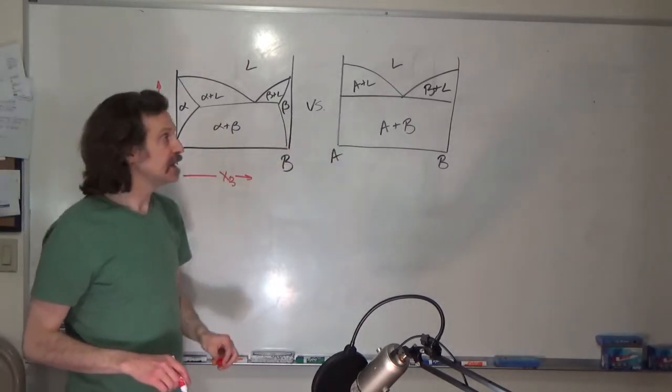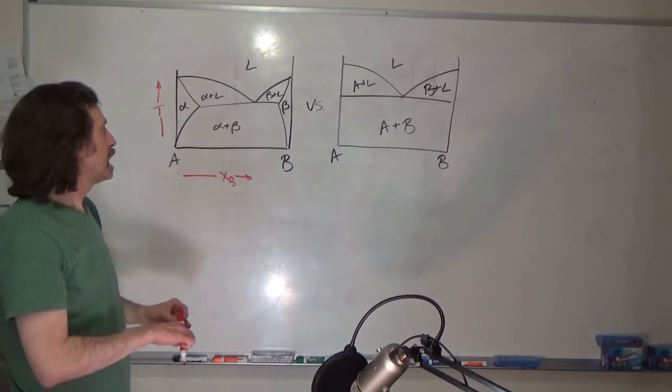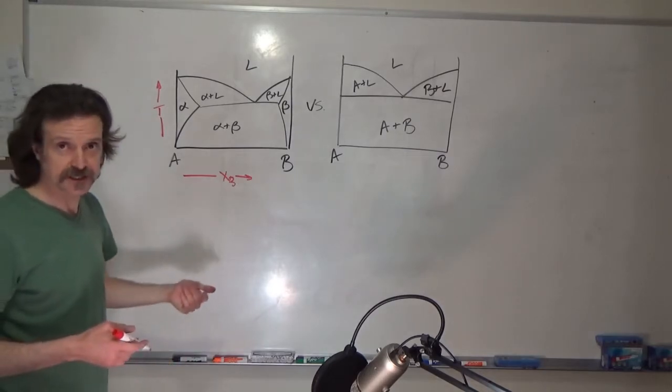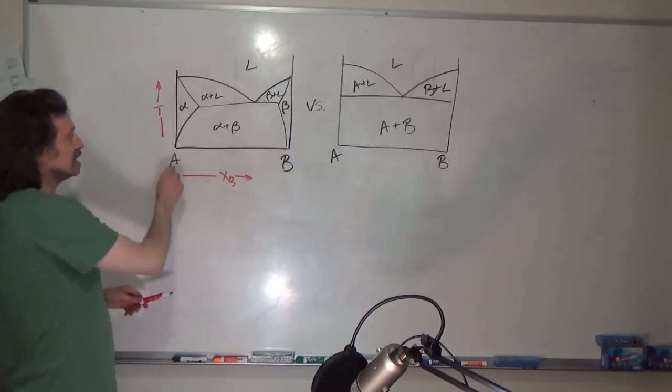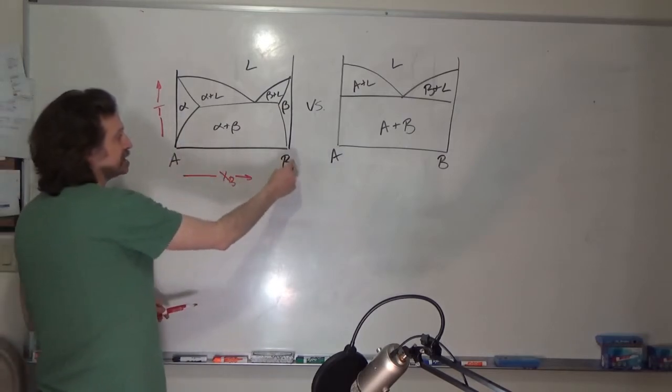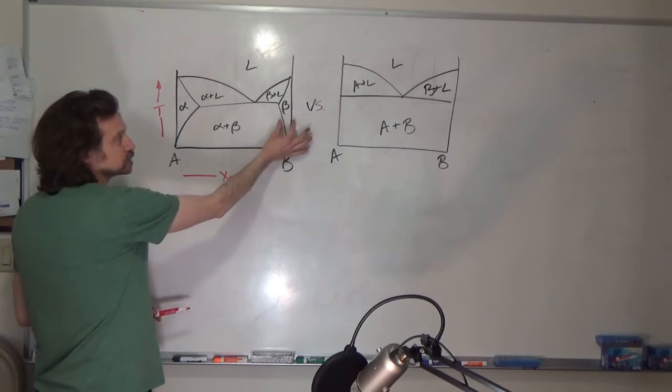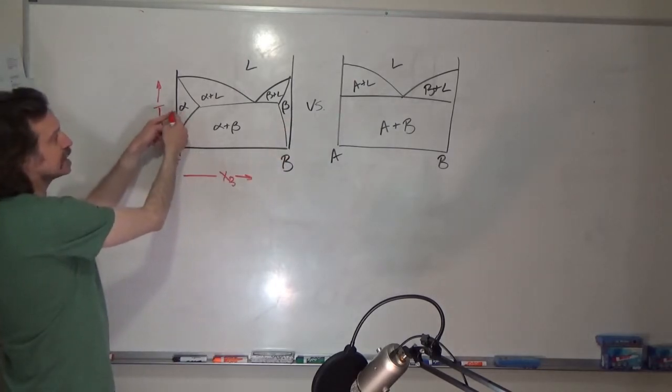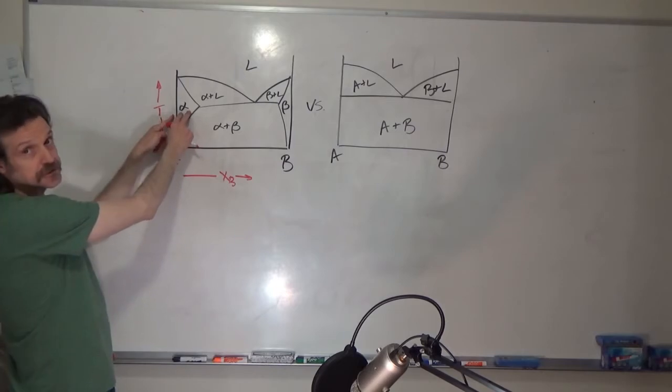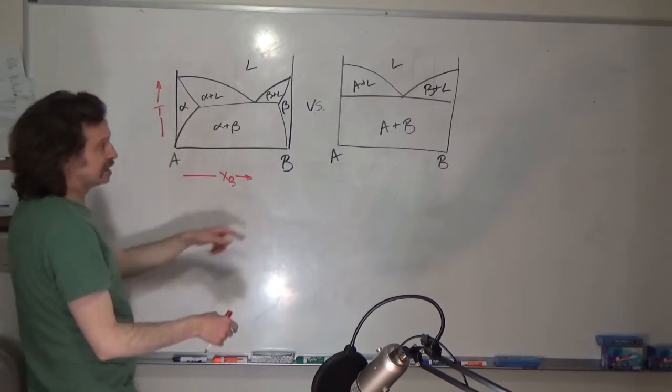over here we have what's called a line compound. And what we're essentially saying is that if the solubility of B in A and A in B gets really small, these lines shrink, this region shrinks until it becomes a single line.